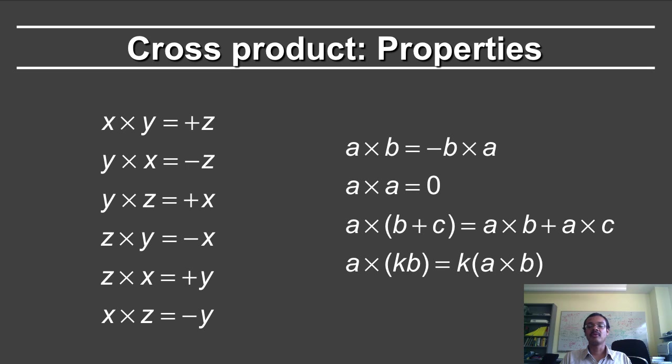It's easy to memorize this by just thinking about the sequence x, y, and z, and cyclically if you go around it. So x cross y will be z, y cross z will be x, and z cross x will be y. If you flip the order, you negate the signs.